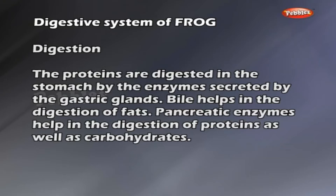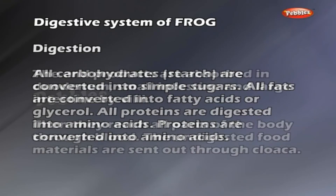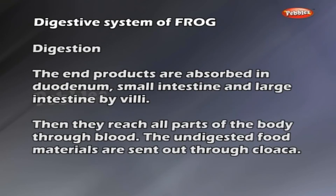All carbohydrates and starch are converted into simple sugars. All fats are converted into fatty acids or glycerol. All proteins are digested into amino acids. The end products are absorbed in the duodenum, small intestine and large intestine by villi. They then reach all parts of the body through blood. The undigested food materials are sent out through the cloaca.